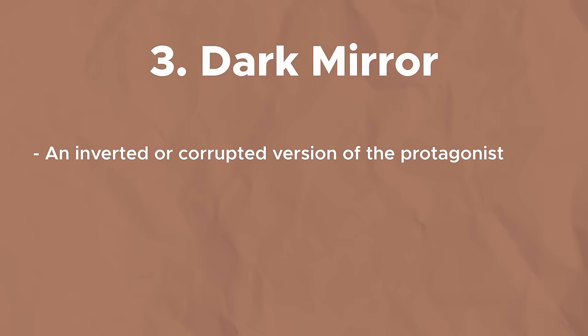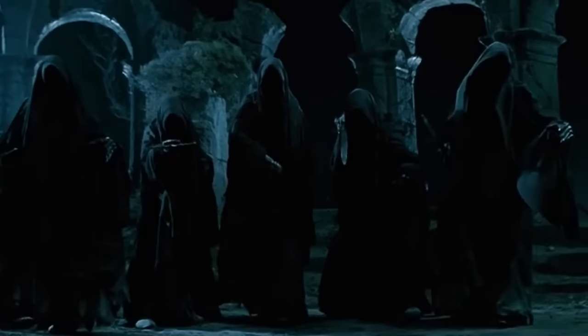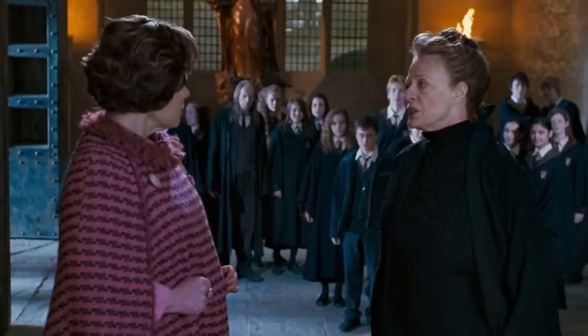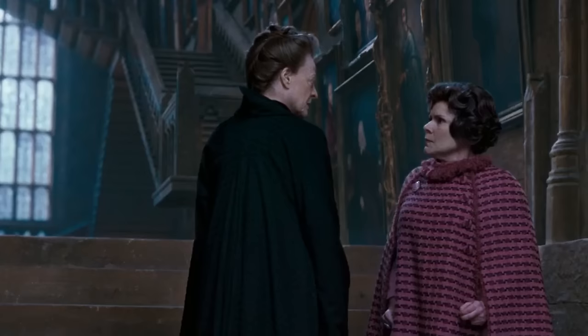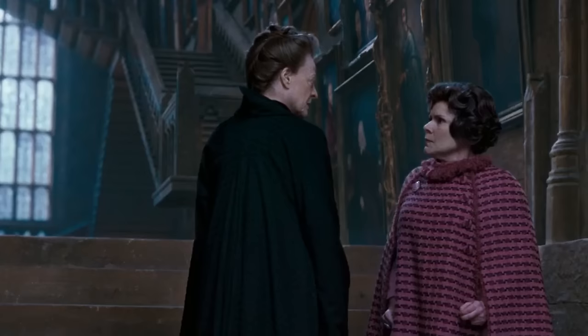Our third antagonist archetype is the dark mirror — an inverted or corrupted version of the protagonist. It's essentially what the protagonist would look like if their life took a turn for the worst. Examples include Darth Vader, Gollum, the Nazgul from Lord of the Rings, and Umbridge from Harry Potter. Umbridge is not a dark mirror of Harry, but of Professor McGonagall — both are extremely obsessed with order and following the rules, but Umbridge takes it to an extreme by physically punishing students.